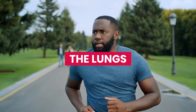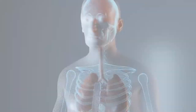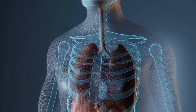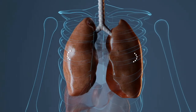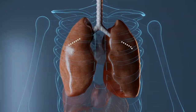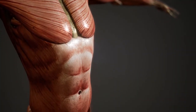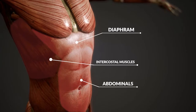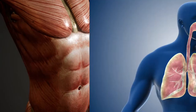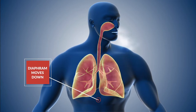The lungs' main role is to bring in air from the atmosphere and pass oxygen into the bloodstream. It then circulates to the rest of the body. In order to breathe, we use the muscle of the diaphragm, the intercostal muscles, and the muscles of the abdomen.